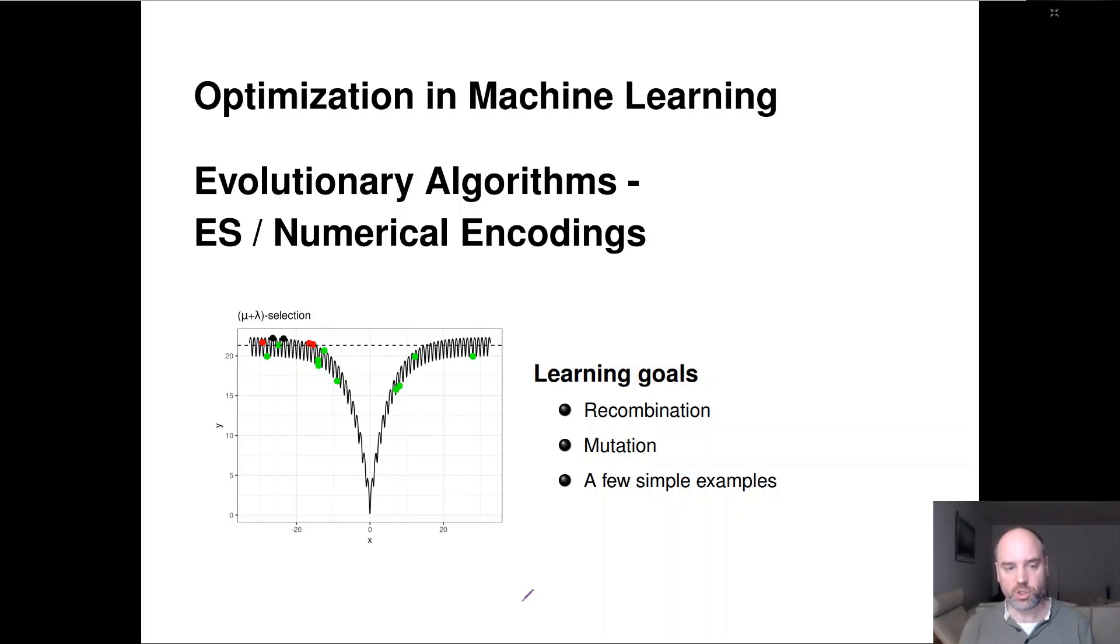Hi and welcome to our next section here in our session on evolutionary algorithms. Here I'll introduce what we usually call an evolutionary strategy. So we'll work on numerical encodings, we'll talk about their associated recombination operators, how we can mutate them, and then we'll look at two simple examples of applying such a numerical evolution strategy.